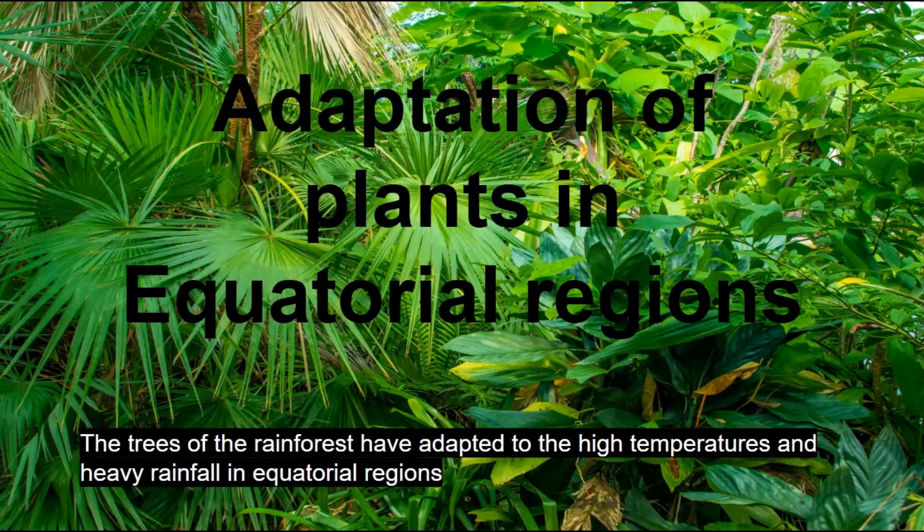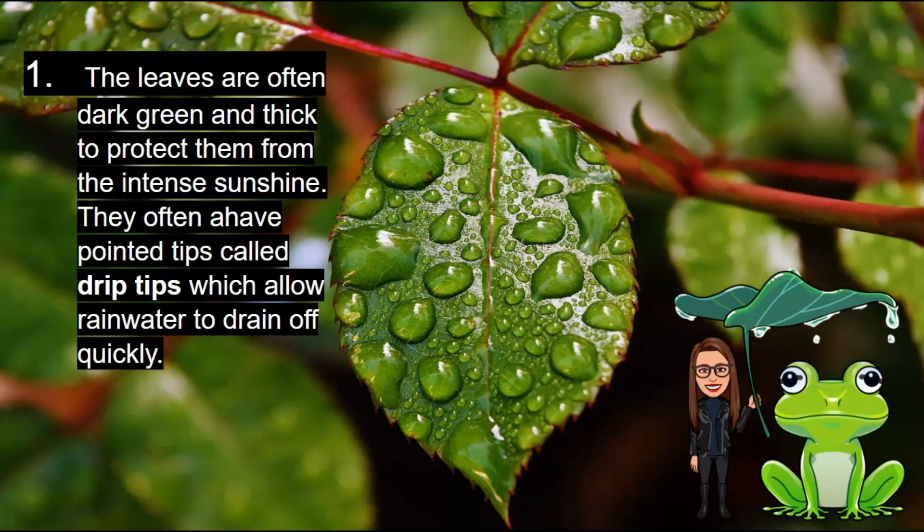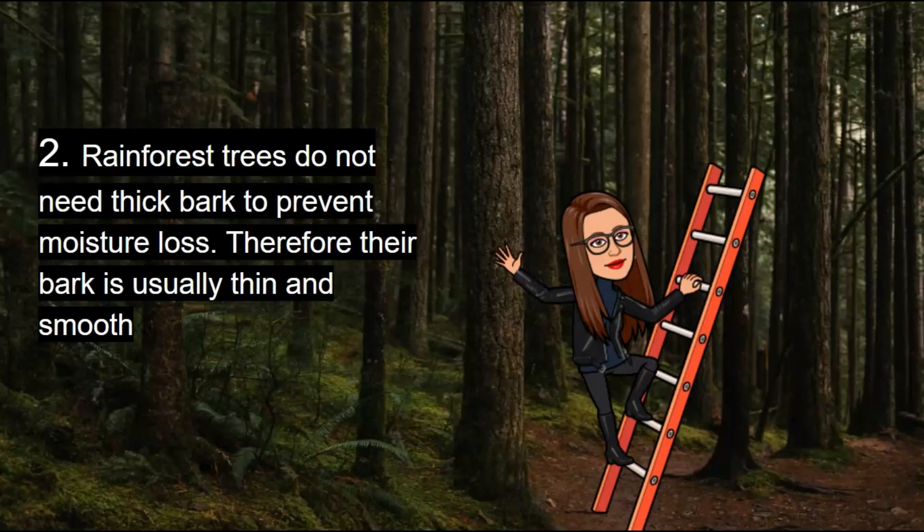Now we are going to talk about the adaptation of plants in the equatorial region. The trees of the rainforest have adapted to the high temperatures and heavy rainfall in many ways. The leaves are often dark green and thick to protect them from the intense sunshine. They often have pointed tips called drip tips, which allow rainwater to drip off quickly. The picture in the background shows an example of one of the types of leaves found in the rainforest that has adapted to its environment.